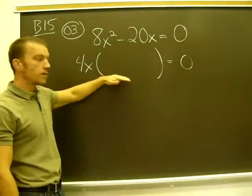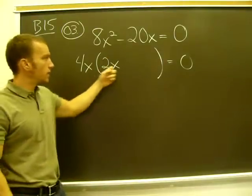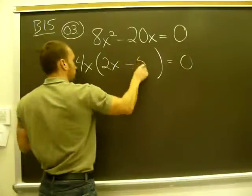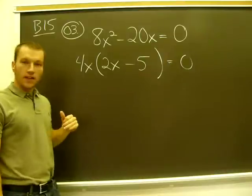And then I'm going to say 4x times what gives me 8x squared? 2x. 4x times what gives me the negative 20x? Negative 5. That one's fairly easy to factor.